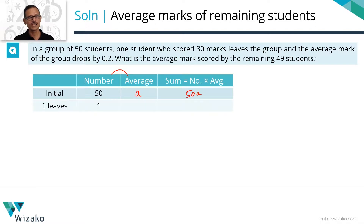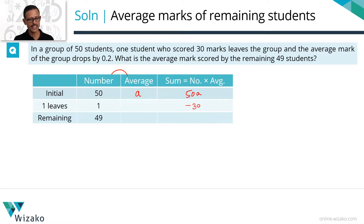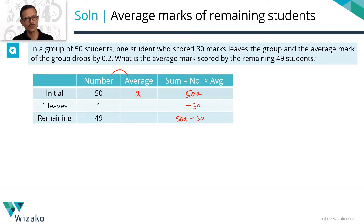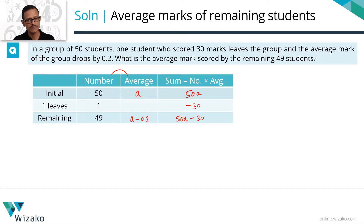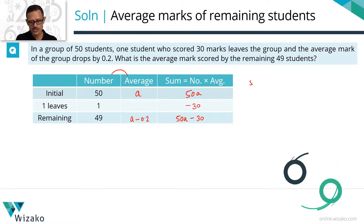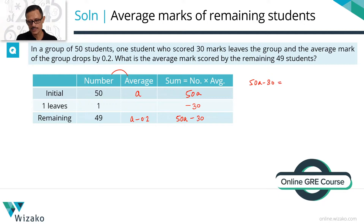One student leaves the group. The student who is leaving has scored 30 marks, so let's subtract 30 from the sum. We now have 49 students remaining, and the sum total of their marks is 50A minus 30. What happens to the average? The average comes down by 0.2. Initially the average was A, so the new average is A minus 0.2.